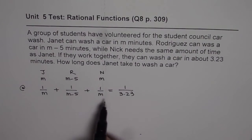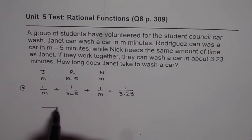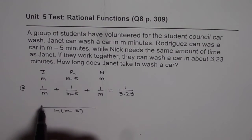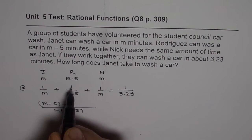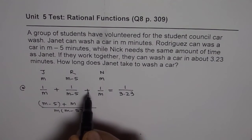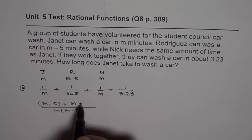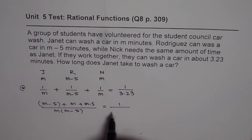Now, we can take common denominator and solve for the single variable M. If I take common denominator here, I get M times M minus 5. So, it gets M minus 5, plus, we need to multiply this by M, and this by also M minus 5, equals to 1 over 3.23.